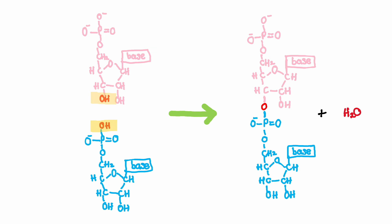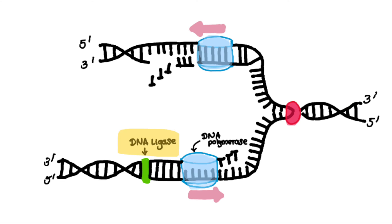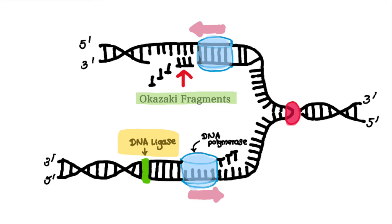The phosphodiester bond forms between the phosphate group of one nucleotide and the deoxyribose sugar of the other nucleotide. During DNA replication on the lagging strand of the replicating DNA, short fragments called Okazaki fragments are synthesized. DNA ligase is essential for joining these fragments into one continuous strand.